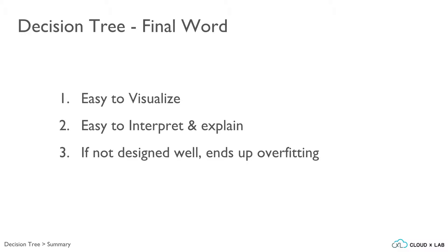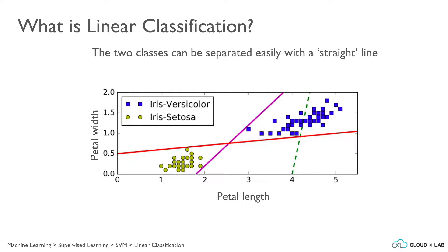In situations where it is mandatory to explain the model to various stakeholders, people prefer to use decision trees, but controlled or regularized ones. We will briefly cover another way of coming up with a model called SVM. Before that, let's understand what linear classifiers are. Consider the two classes — setosa and versicolor — from the iris dataset. We can visualize the two groups on a graph. If we are to separate these two groups using one straight line, we can have multiple such straight lines to do so. Simple linear classifiers do exactly this — separating the groups using a straight line. Three sample lines are shown: red, violet, and dotted green.